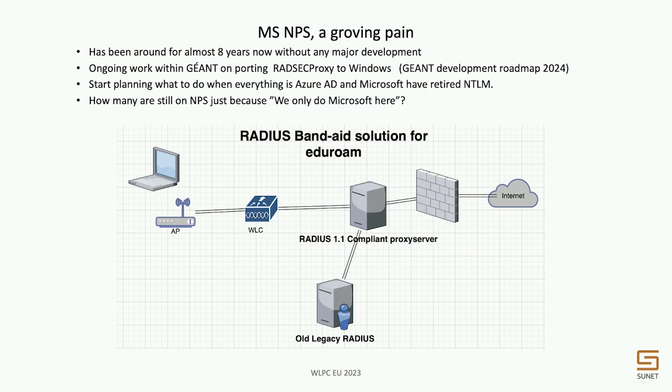I'm not telling you what the old legacy RADIUS is - it's not NPS, but anyway. If you have an NPS here, what you can do is let your proxy server decide whether the packets are going locally or out to the wonderful world of RADIUS servers. What you can then do is set it up to do RadSec, maybe just point-to-point, or RadSec dynamic lookup. It can also do attribute filtering, which is kind of important when you're doing eduroam.